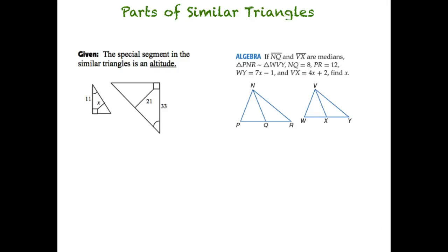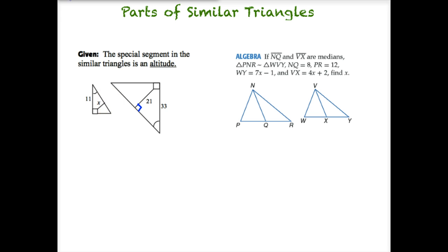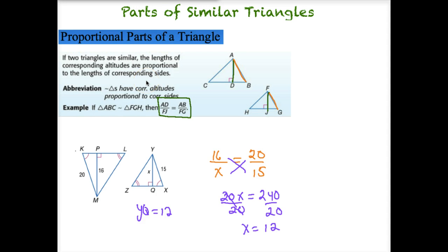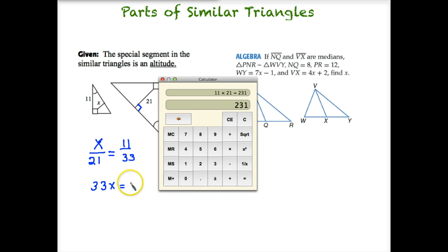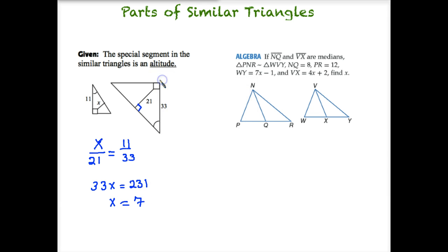Let's try two more problems. In our first situation, the special segment in the similar triangles is an altitude, which must form a 90 degree angle. The lengths of the corresponding altitudes are proportional to the corresponding sides. So X, the altitude in the small triangle, over 21 is in the same proportion as 11 in the small triangle to 33. Cross multiplying, 33X equals 11 times 21, which is 231. Dividing by 33, X equals 7 in the small triangle.